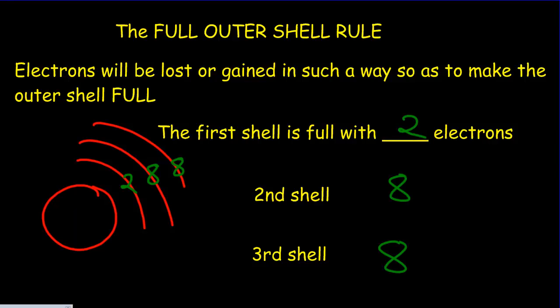It turns out that atoms are much more stable when they have a full outer shell, and that's why they tend to complete that outer shell.